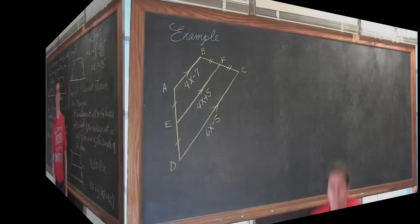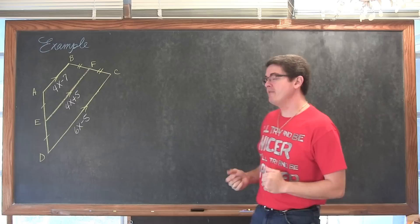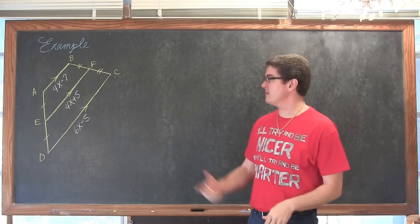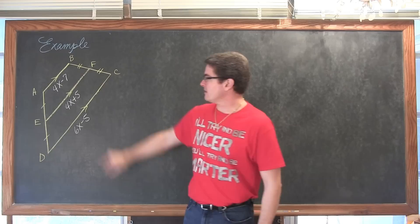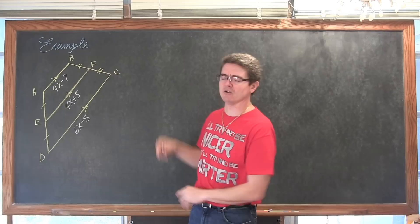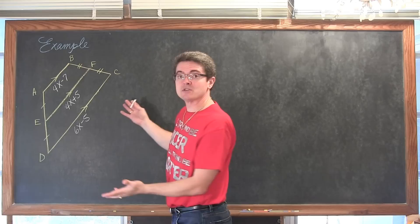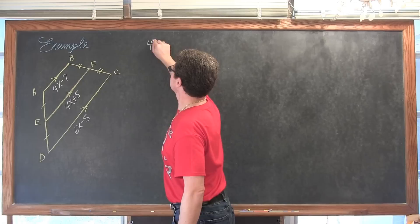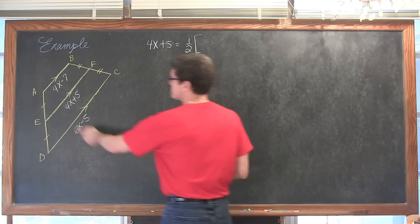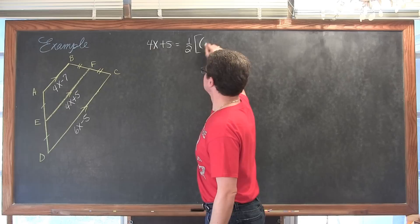Let's do an example dealing with this theorem. Here we have a trapezoid with one pair of parallel sides and a mid-segment going through the middle. EF is the mid-segment of trapezoid ABCD, which means its length equals half the sum of the two bases. We need to solve for x and find the three lengths. So we have 4x + 5 equals one half of the sum of the two bases.